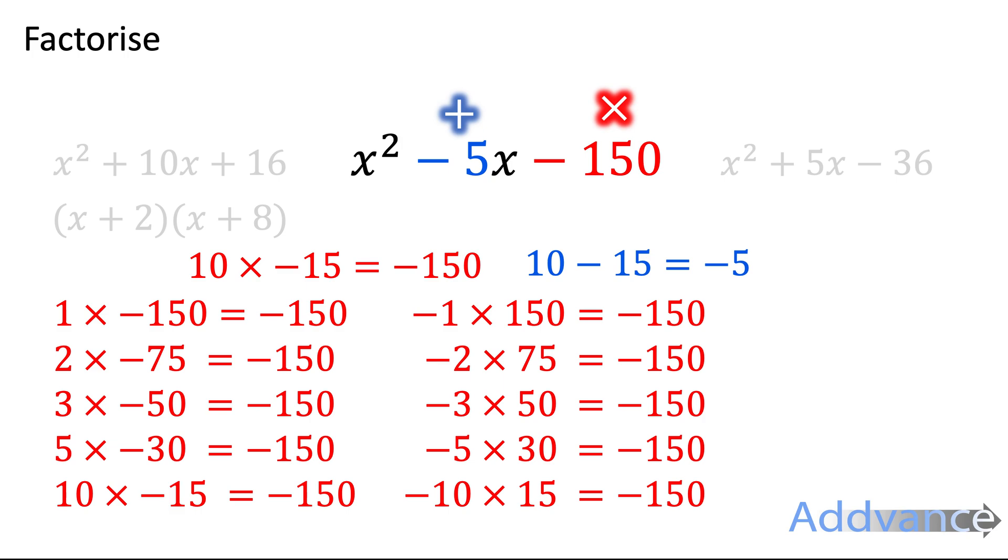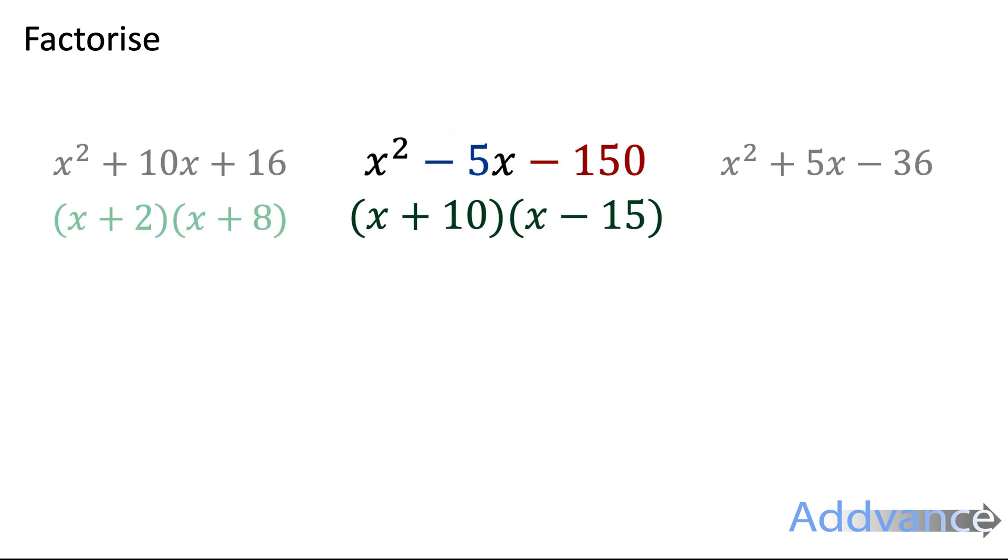Okay, it really helps to write out all the pairs, so you're always able to spot the pair that works, for the multiplying and the adds. Now we know that the numbers are 10 and minus 15, we can put it into brackets like this, x plus 10, x minus 15. And that is the final answer.